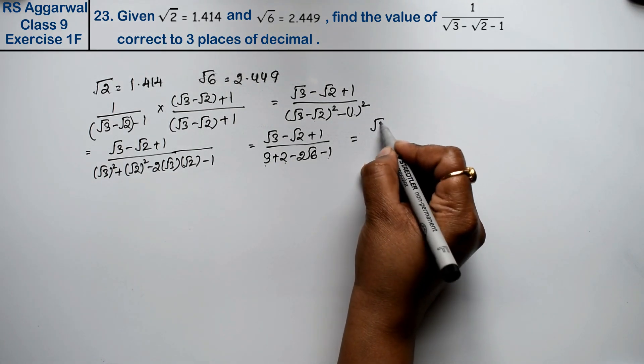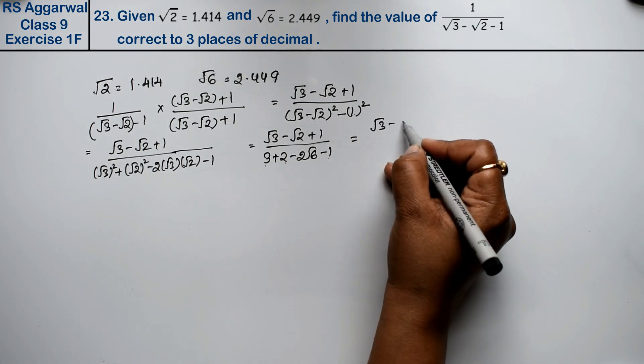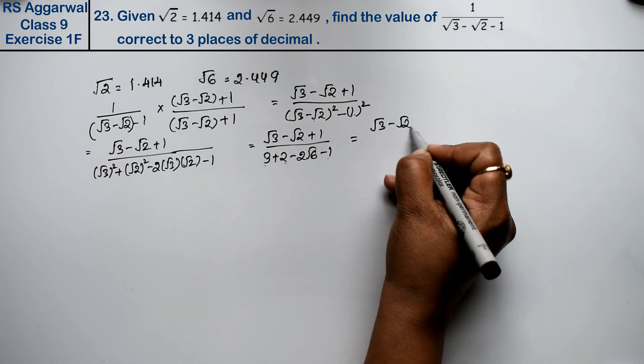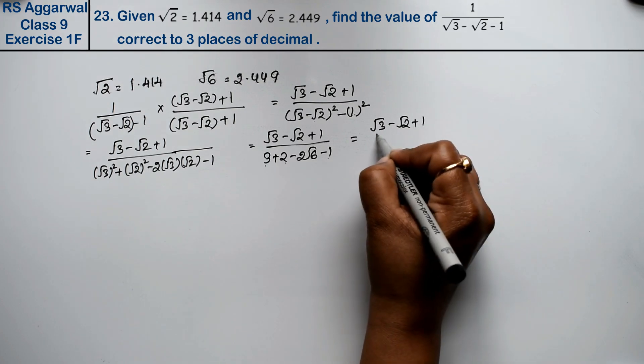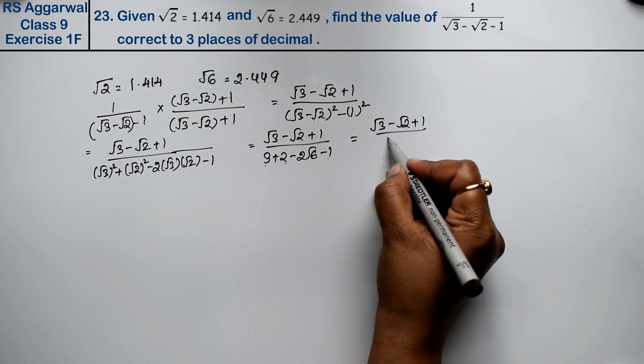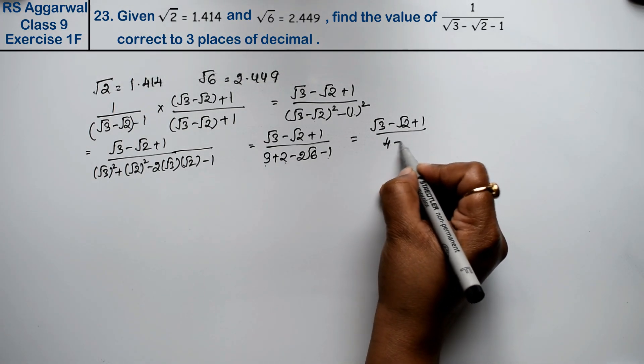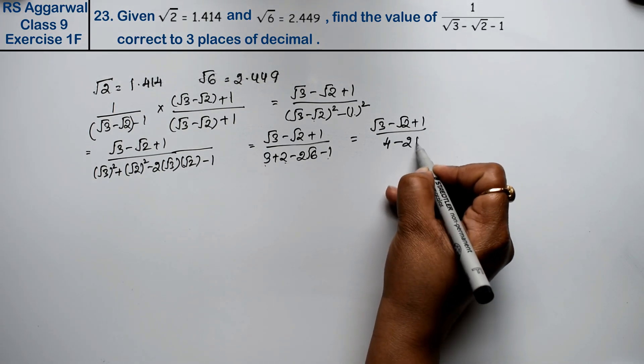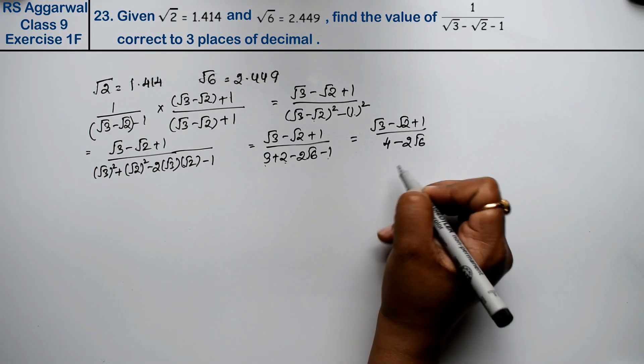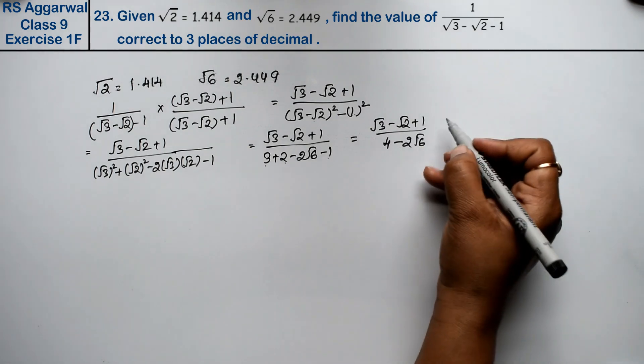So we have root 3 minus root 2 plus 1 upon root 3 minus 4 minus root 2 times root 6. Now we will rationalize with 4 plus 2 root 6.